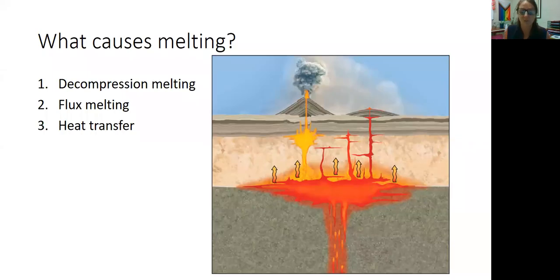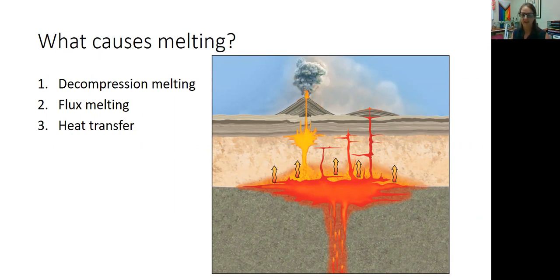We know that igneous rocks form from molten rock, rock that has been melted, but what causes that melting? Where does the magma come from in the beginning? We're going to talk about three ways that rocks can melt: decompression melting, flux melting, and heat transfer.